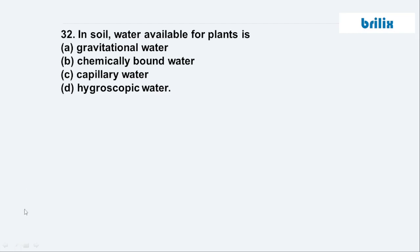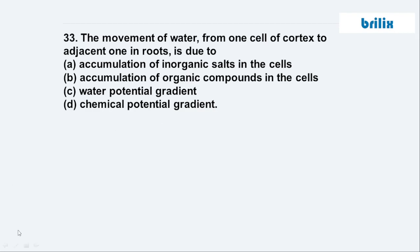Question 32: In soil, the water available for plants is capillary water, which is available for absorption by plants. Question 33: The movement of water from one cell of the cortex to the adjacent one in the root is due to water potential gradient — option C is the most appropriate answer.